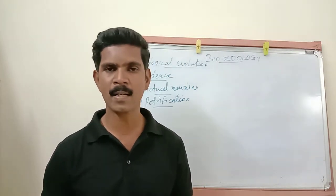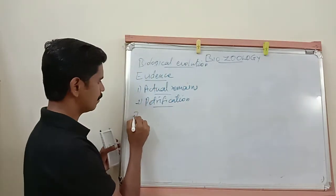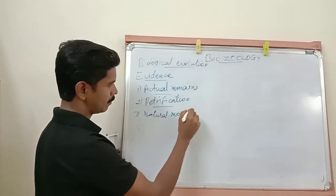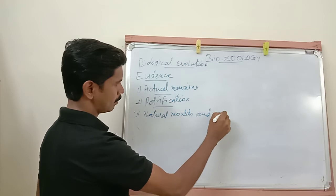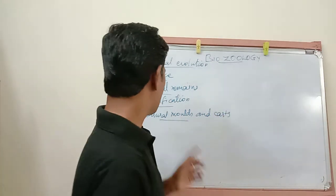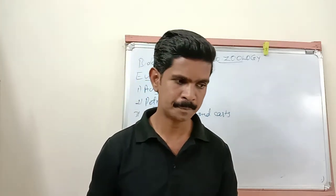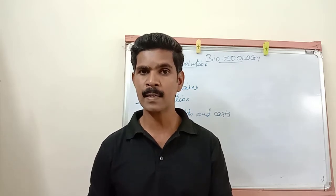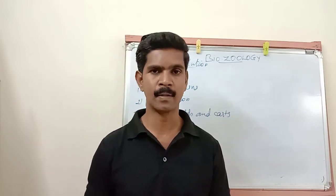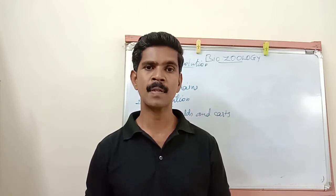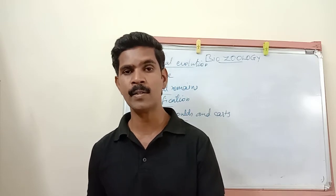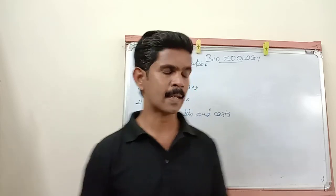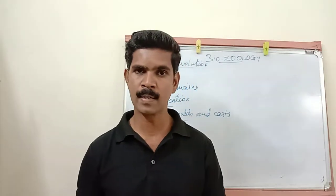The third category is natural mold and cast. After the death of some animals, they lie in the soft muddy region of the earth. Later, these impressions became very hard and changed into a stone-like structure. This stone-like structure is called a mold.